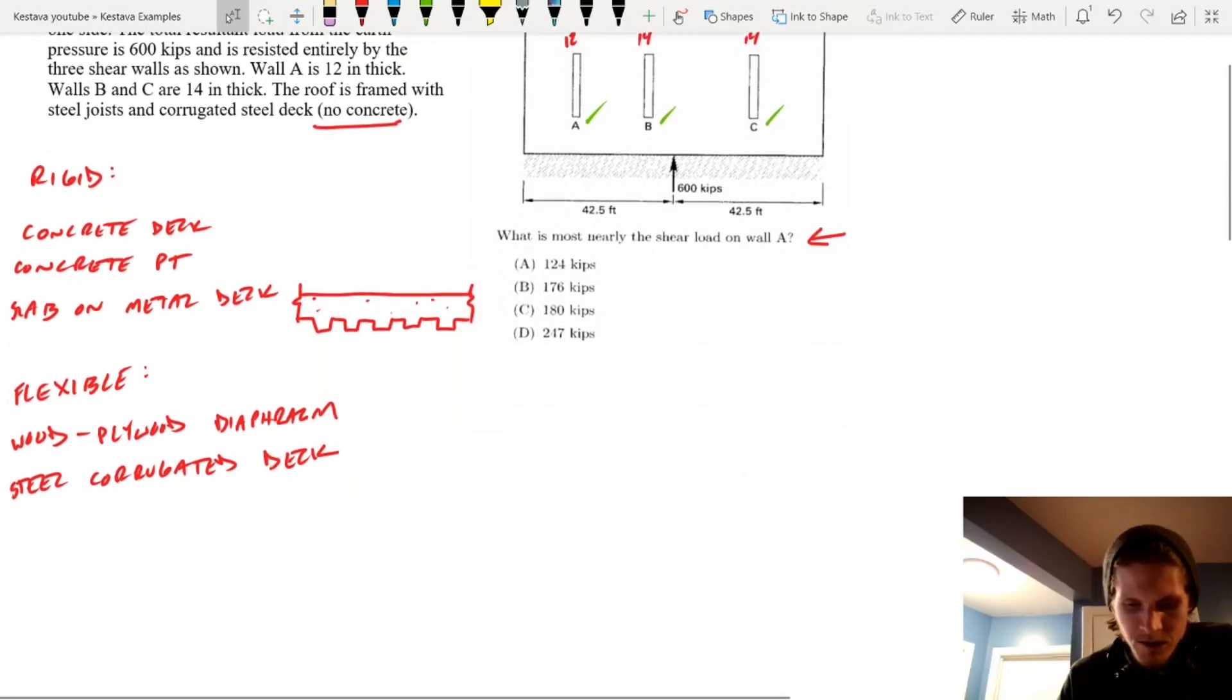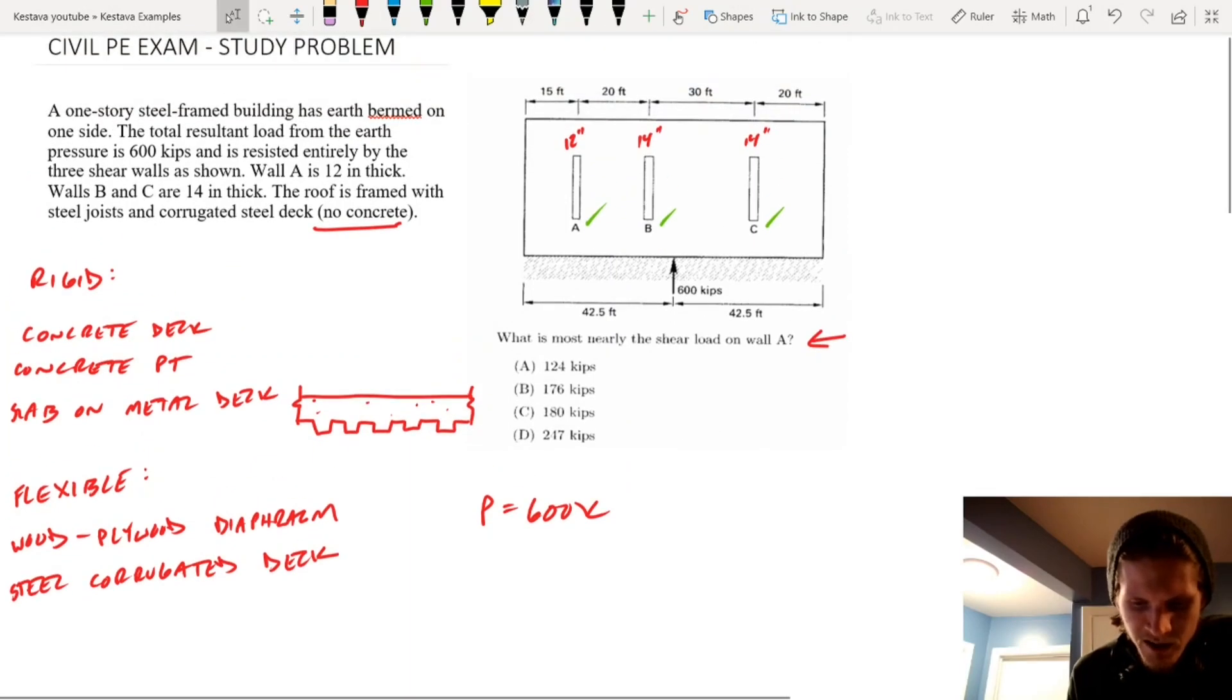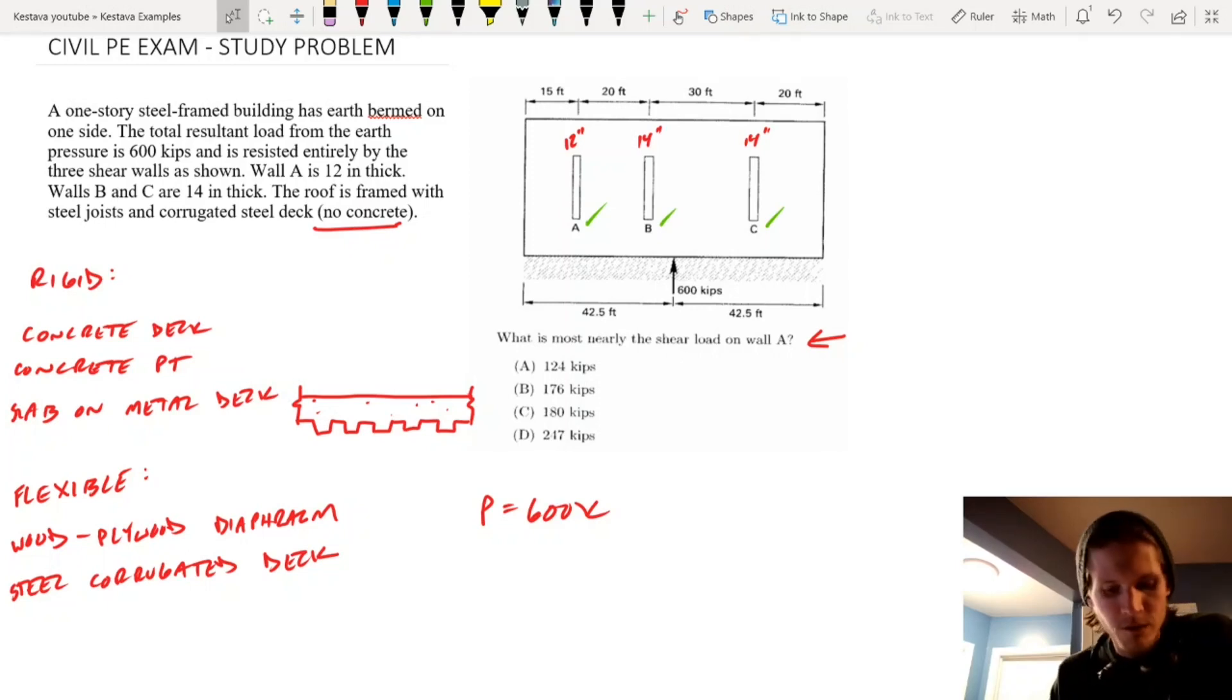We'll walk through it now. Now, you have a 600 kip, we'll call that P, 600 kip lateral load, and because load distribution is just purely based on trip width, we need to find what our tributary width is for wall A. Wall A is what we're looking for.